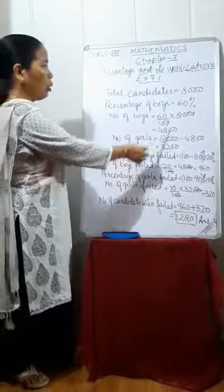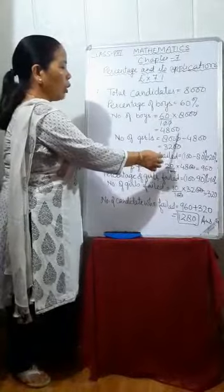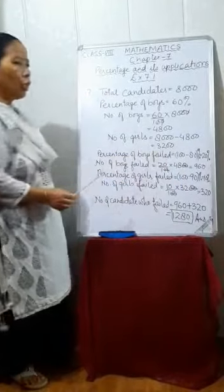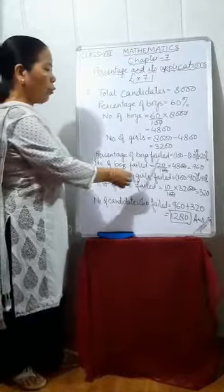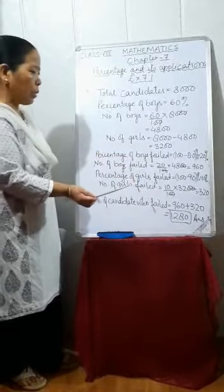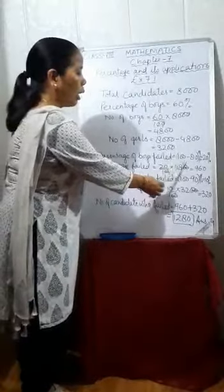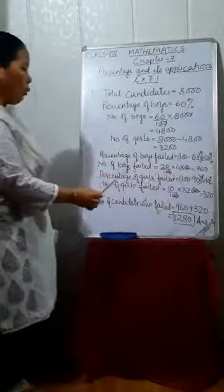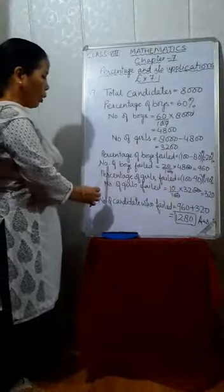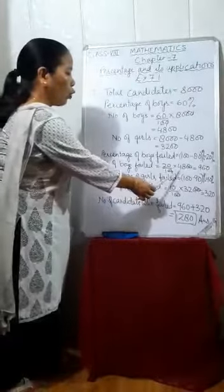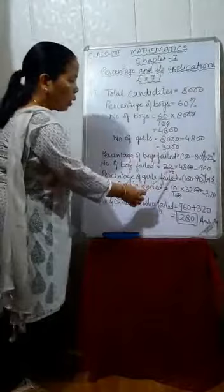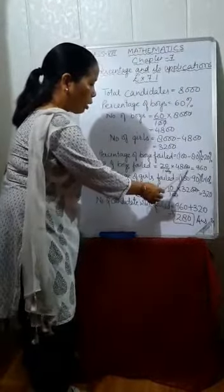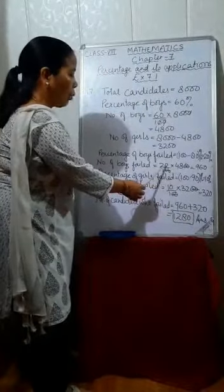Number of girls equals total candidates minus number of boys, that is 8,000 minus 4,800, which equals 3,200. Now, percentage of boys passed is 80%, so percentage of boys who failed equals 100 minus 80%, that is 20%. Number of boys who failed equals 20% of 4,800, which is 20 upon 100 multiplied by 4,800, equals 960.